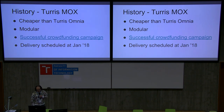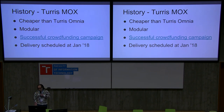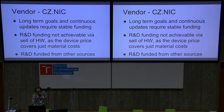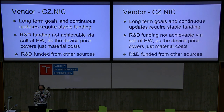Turris Mox should be cheaper because Turris Omnia's price is prohibitive for regular users. It's modular, again a successful crowdfunding campaign, and delivery is scheduled this month. The vendor is CZNIC. Its long-term goals of the project and continuous updates require stable funding — R&D funding is not achievable by selling hardware because it's already very costly and the cost covers just material costs. R&D is funded from other sources. CZNIC is a non-profit organization founded in 1998 by academic members, a founding member of Internet Peer, an Internet Exchange in Czech Republic, a top-domain .cz registrar, and an established open-source vendor.